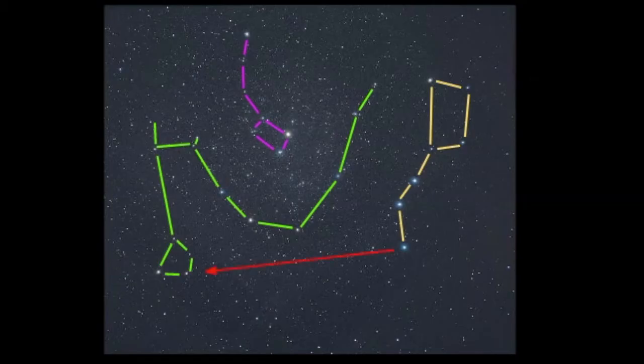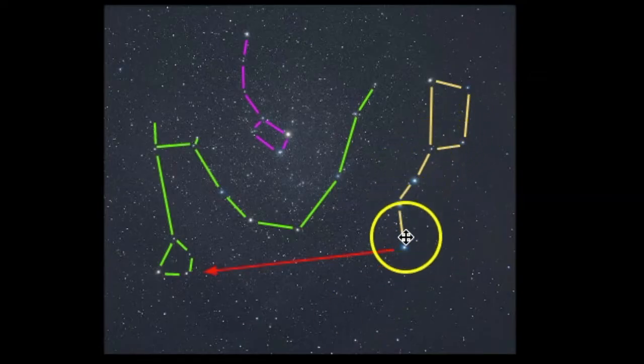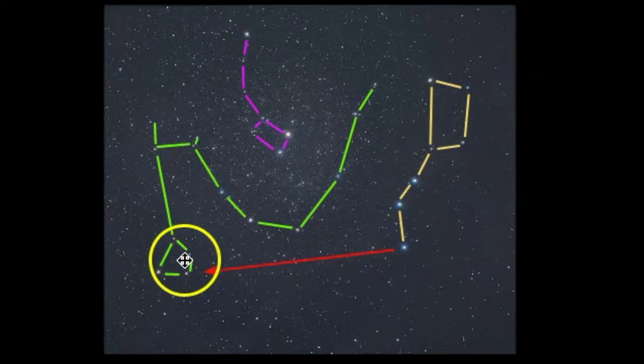Another way to help find Draco is that when you have the handle of the Big Dipper, you can draw a line that way and it'll point to the head. So that's another strategy you can use to find Draco.